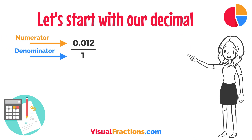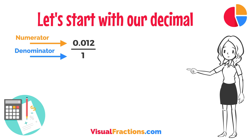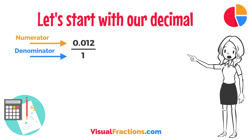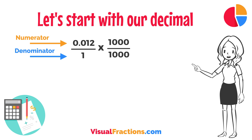This sets up the conversion process where we multiply both the numerator, 0.012, and the denominator, 1, by 1,000 because there are three decimal places.